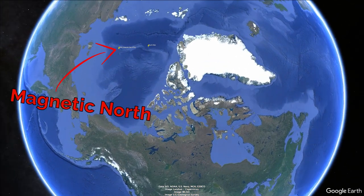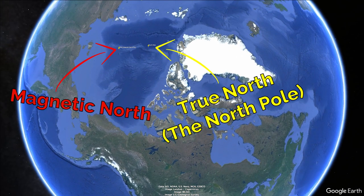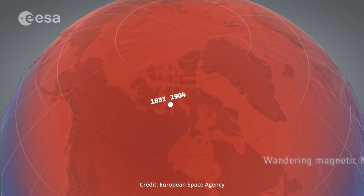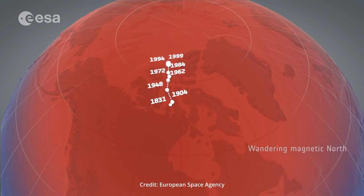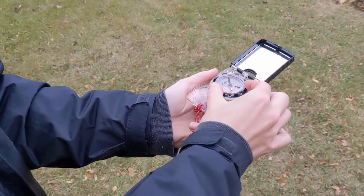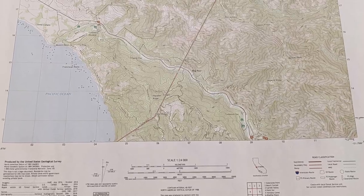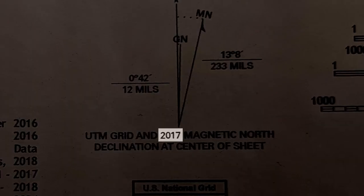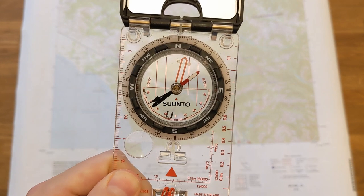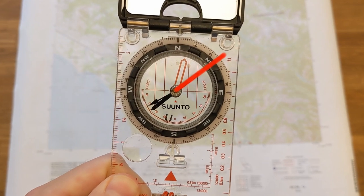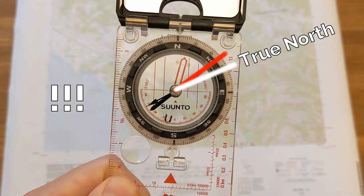You might not have known that Magnetic North is not the same as True North, and Magnetic North is always changing over time — currently drifting away from Northern Canada and towards Siberia. The Magnetic North Pole is where your compass needle points, so depending on where and when you are on Earth, the difference in angle between your needle and the direction of True North will change.